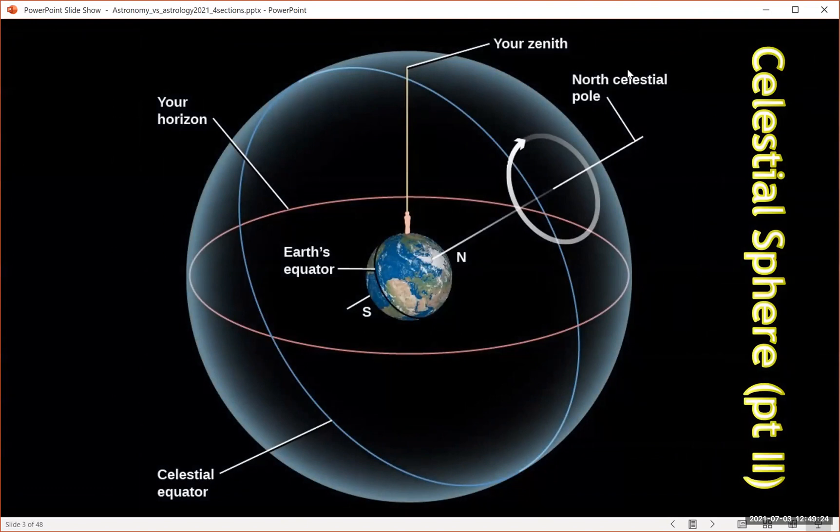Now we need to think about this in terms of how things move. So here we have the earth again with the north pole, the south pole, the equator. Here we have someone standing in North America, not to scale, and the point directly above your head no matter where you're standing is called the zenith. And then this pinky colored line here shows you your horizon. So you can see everything above that line and nothing below it.